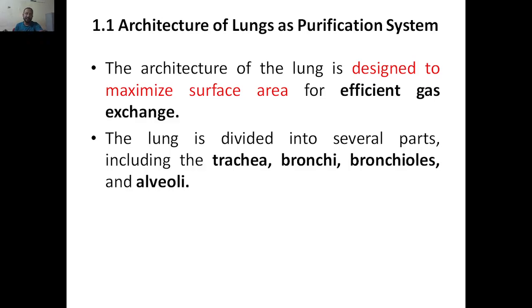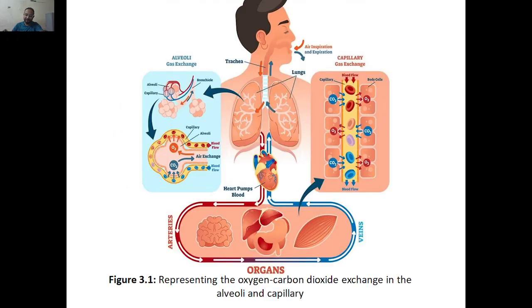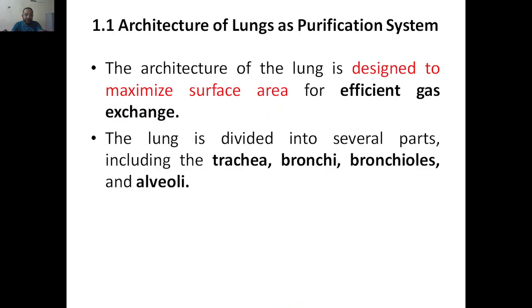So in this particular topic — the architecture of lungs as a purification system — we are going to discuss the architecture of the lung in detail. The architecture of the lung is designed to maximize surface area for very efficient gas exchange. The major functions are filtration and moisturization, happening in the nose and mouth and trachea.